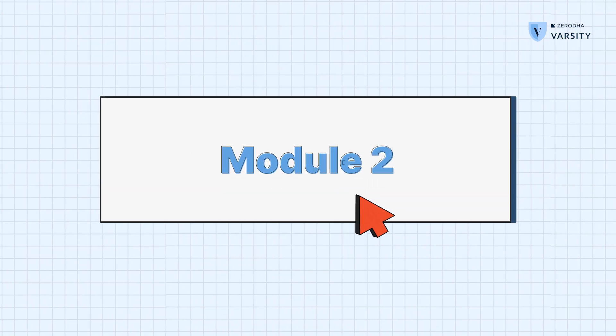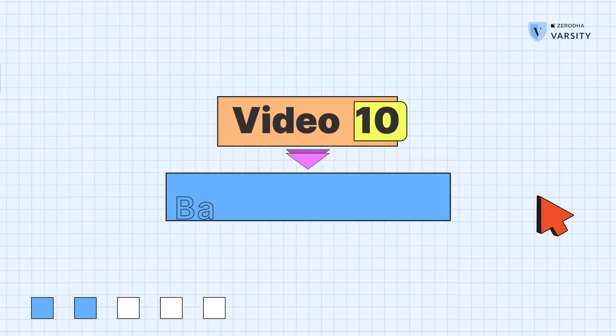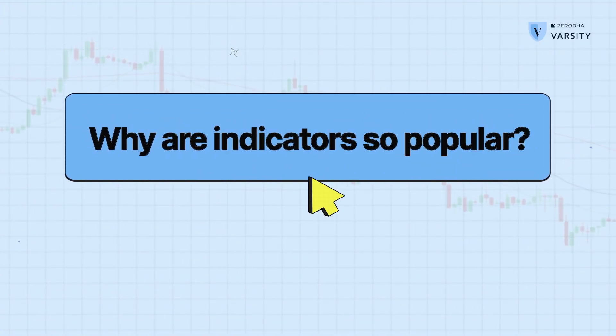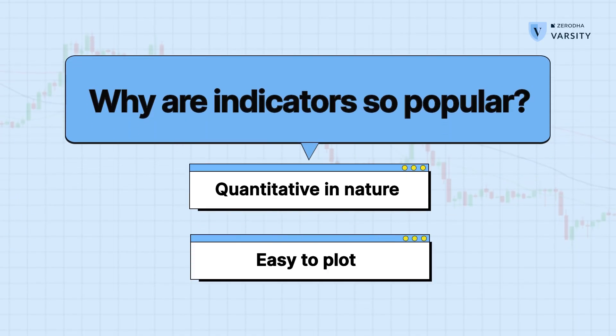Hi guys, my name is Prateek Singh and in this video we're going to learn about indicators. Indicators are probably the most popular tool amongst the trading community and people like it for two reasons. One is that it's quantitative, which means you can actually see a number on your screen and based off of that, take a trading decision. And second, it's very easy to plot. After the advent of the internet, calculating these indicators is done by the charting platform so you can focus on analysis.